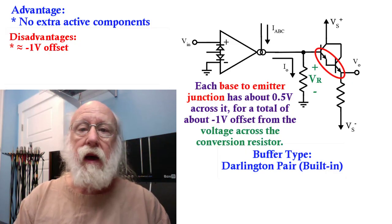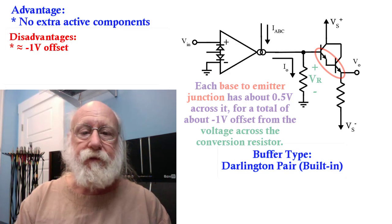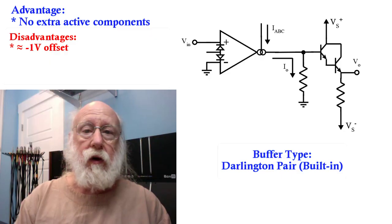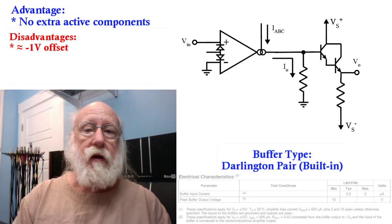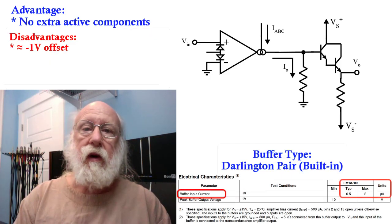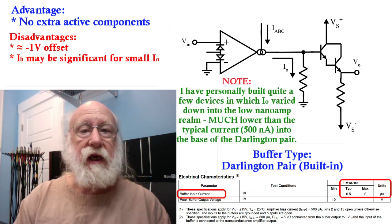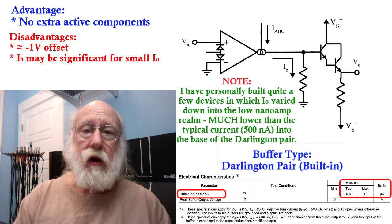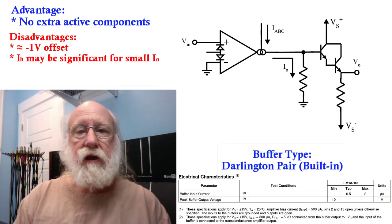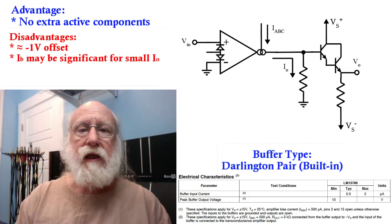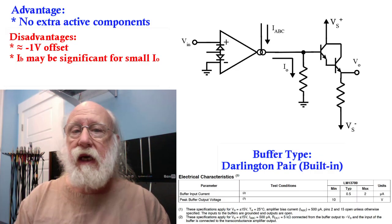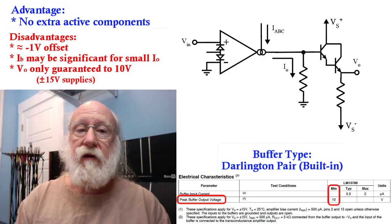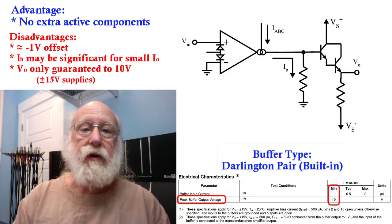Another disadvantage is that with extremely low output currents, the Darlington pair may steal a significant percentage of that output current, which is then going to distort your results. Also, if running plus and minus 15 volt supplies, the manufacturer only guarantees that the maximum output voltage can go to about 10 volts, so that's another potential problem.